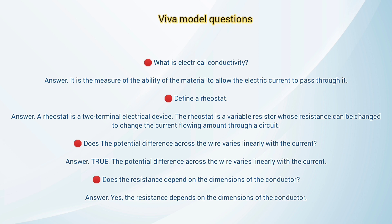What is a rheostat? A rheostat is a two-terminal electrical device used to vary the voltage or current in a circuit. Does the potential difference across the wire vary linearly with the current? Yes — the graph plotted is linear, so the potential difference varies linearly with the current. Does resistance depend on the dimensions of the conductor? Yes, resistance depends on the dimensions of the conductor.